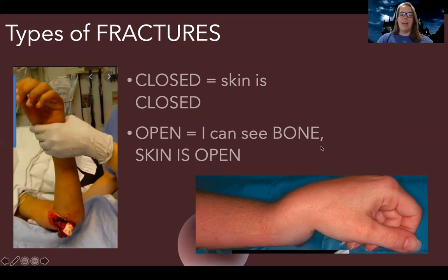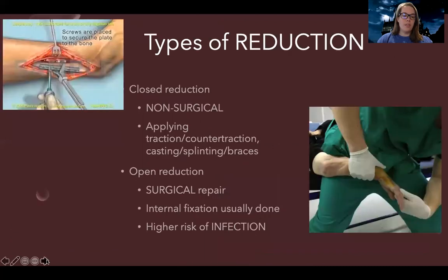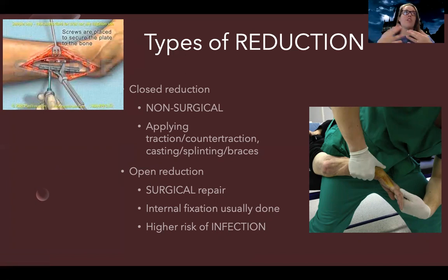So first we're just talking about types — is it closed, skin is closed, or is it open, the skin is open. There's also what's called reduction. When we're talking about reduction, the doctor is trying to get the bone back in the place that it's supposed to be. There's both closed and open reductions, and this is the procedure they're doing in order to get the bone back into place.